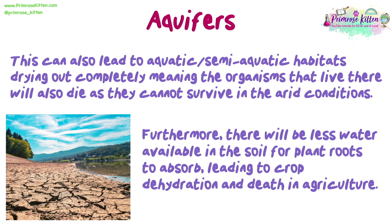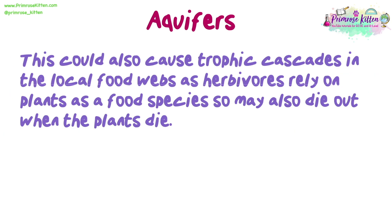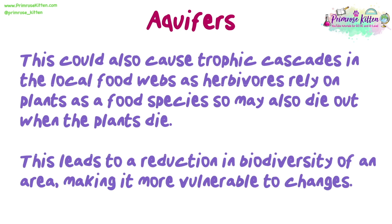Furthermore, there will be less water available in the soil for plant roots to absorb, leading to crop dehydration and death in agriculture. This could also cause trophic cascades in the local food webs, as herbivores rely on plants as food species, so may also die out when the plants die. This leads to a reduction in biodiversity of an area, making it more vulnerable to changes.